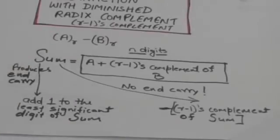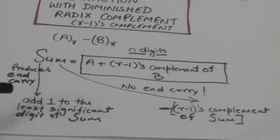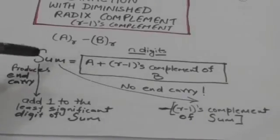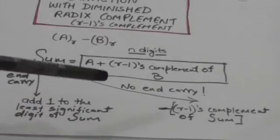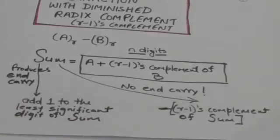First we will find (r-1)'s complement of B and add it to A. If the sum produces an end carry, we will add 1 to the least significant digit of the sum, and that would be the result. If the sum produces no end carry, then the result would be minus the (r-1)'s complement of the sum.